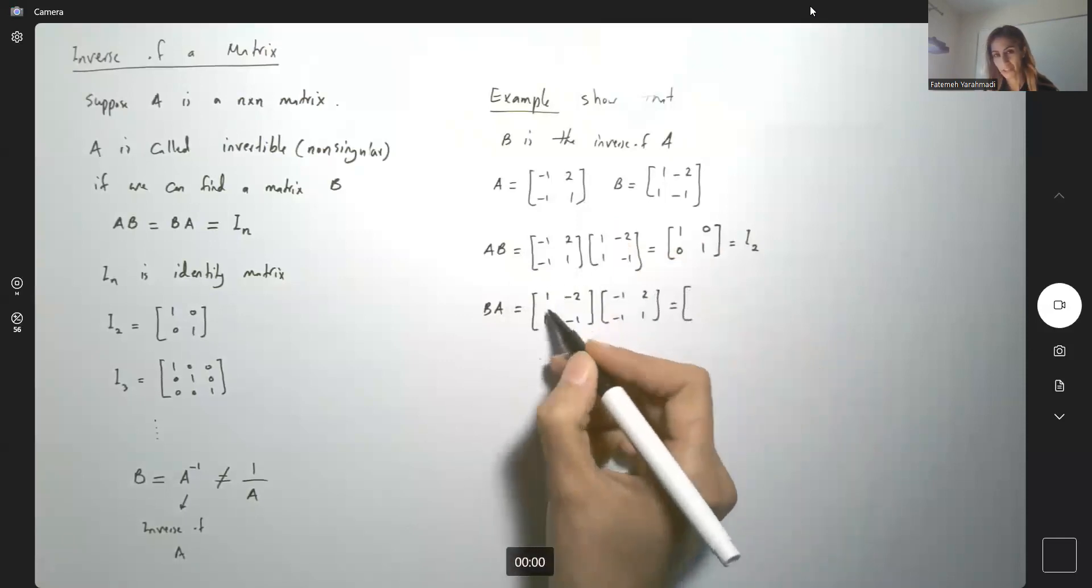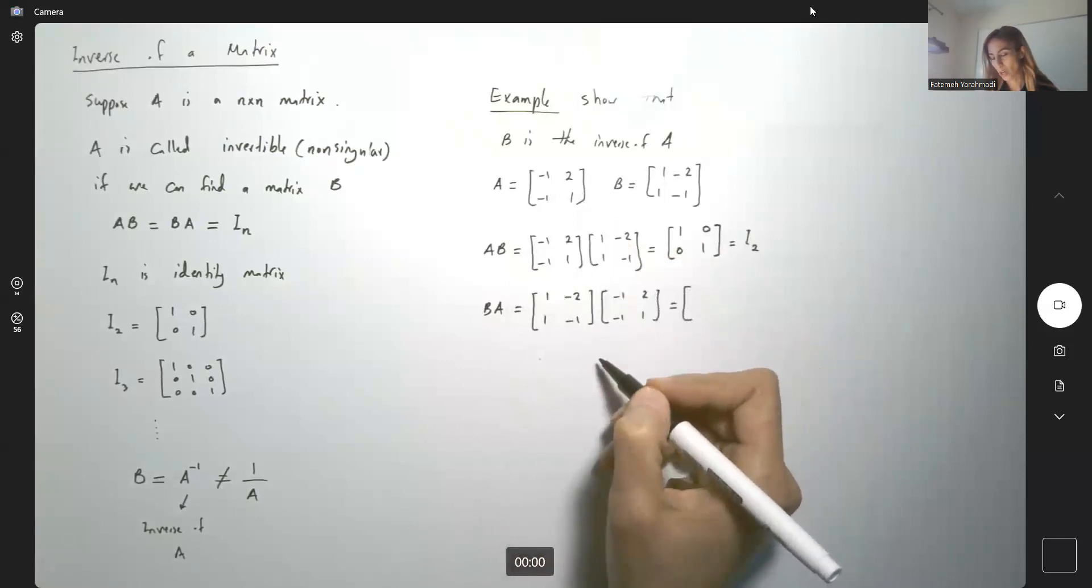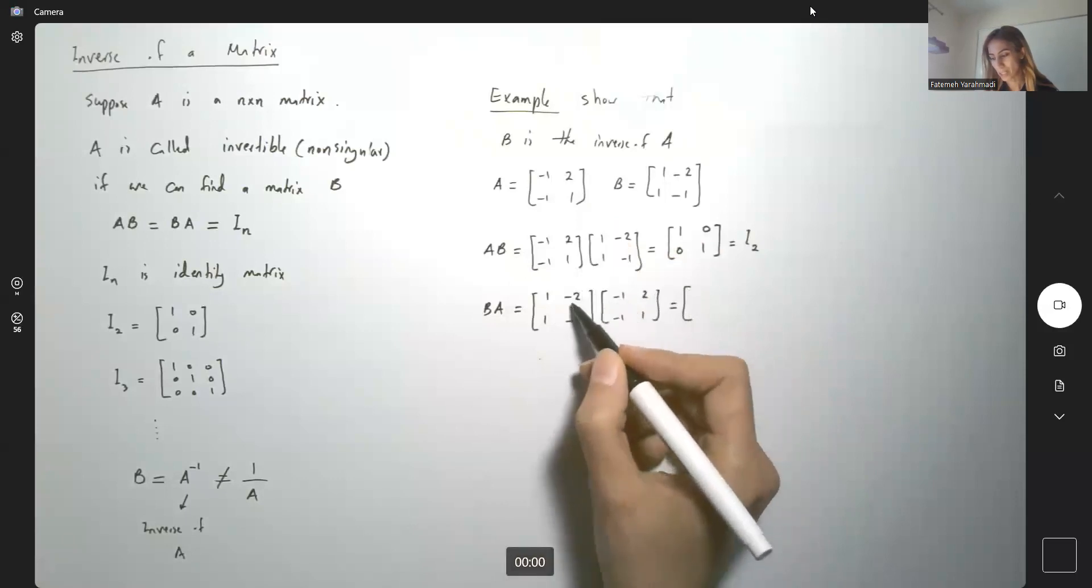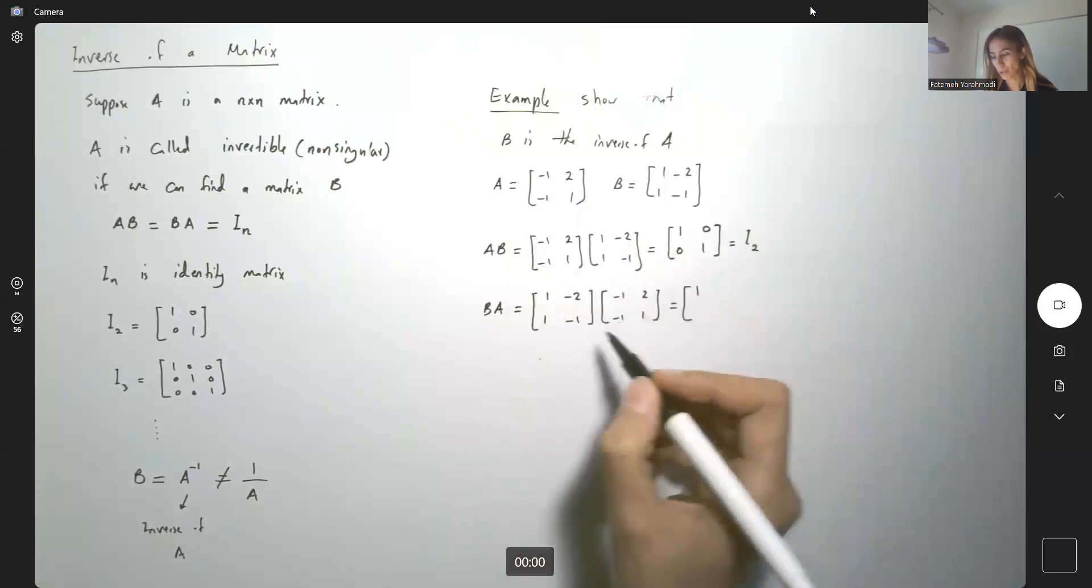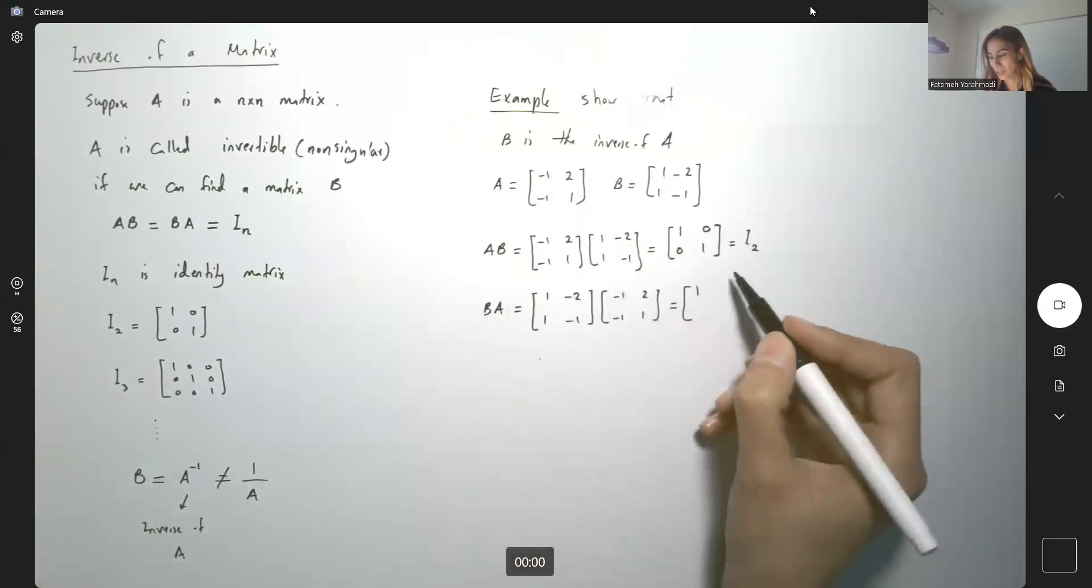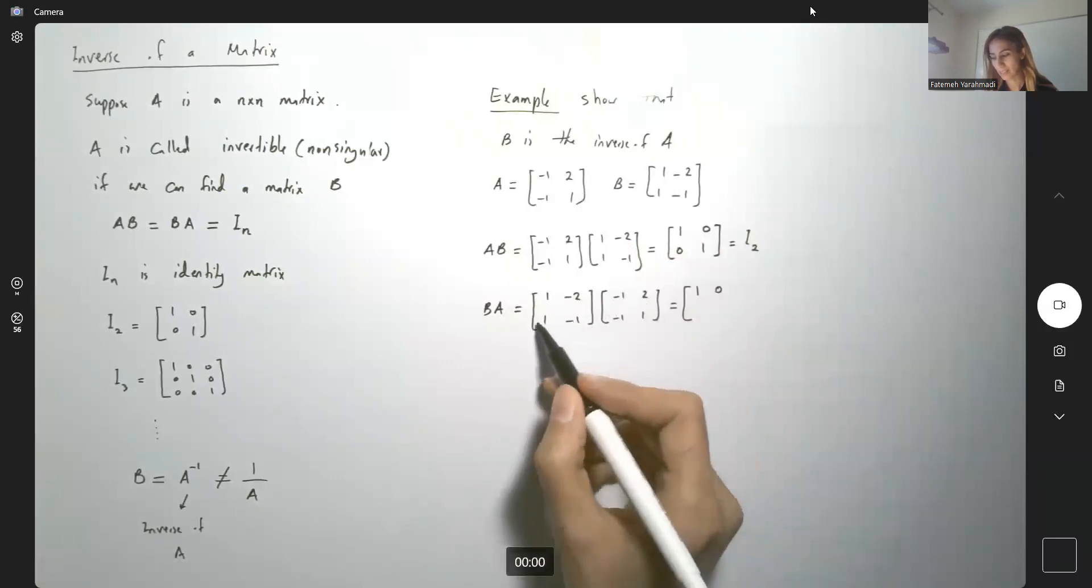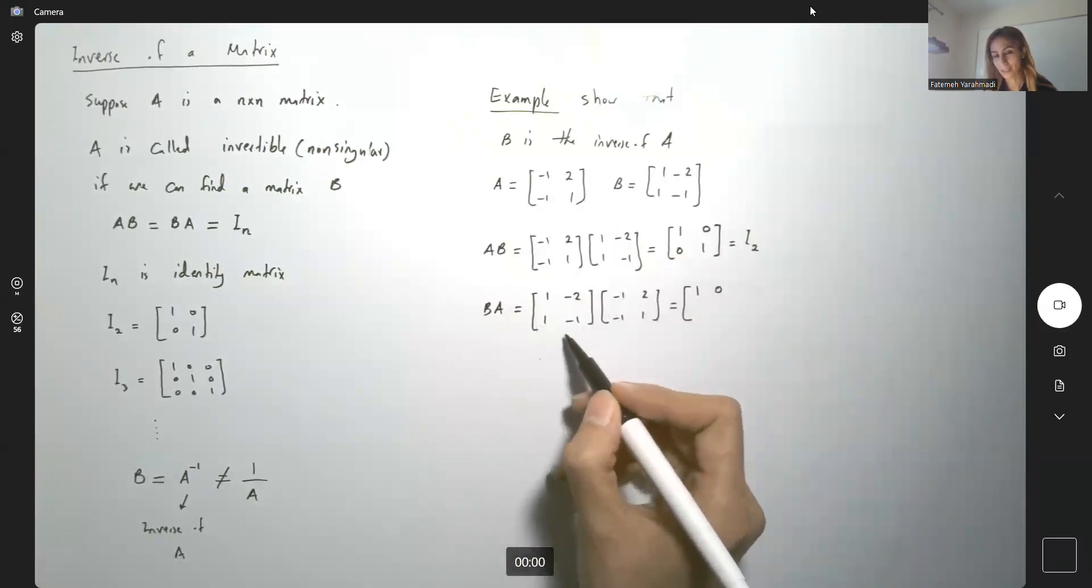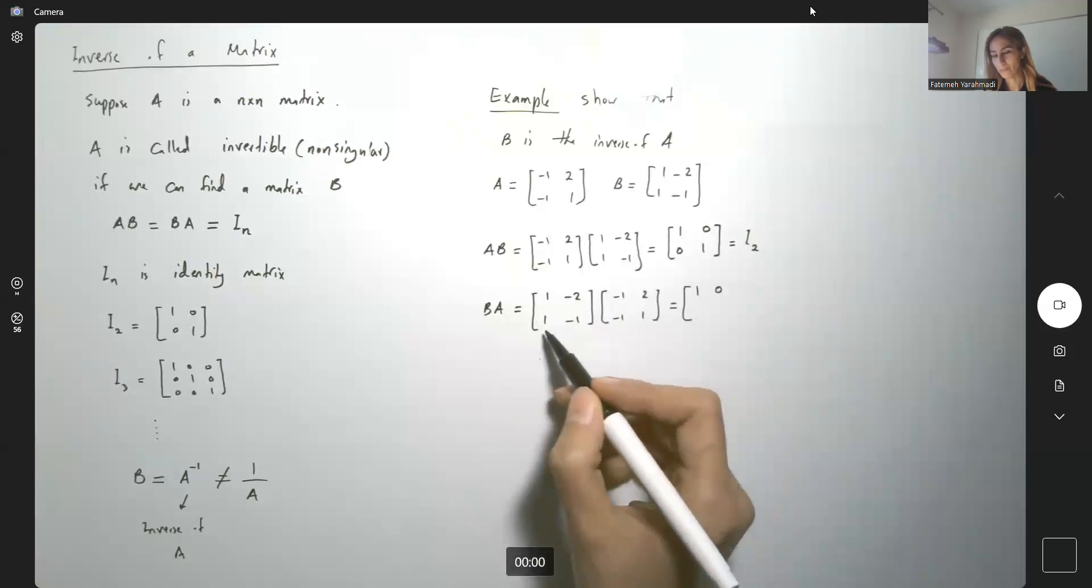So the very first row multiplied by the first column. We get negative 1 plus 2, which is 1. Here we are multiplying these two. 1 times 2, 2. Negative 2 times 1, negative 2. So we get 0 back.